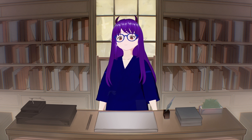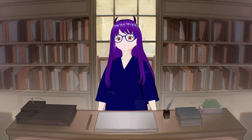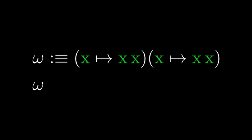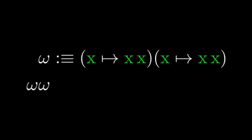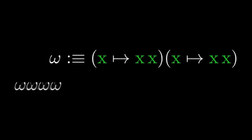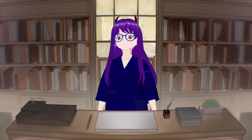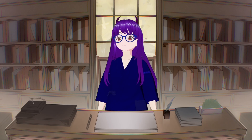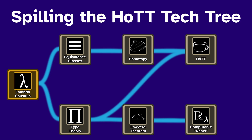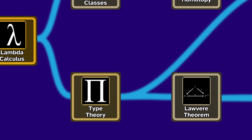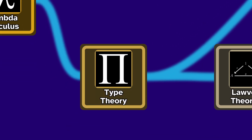In the last video we left untyped lambda calculus with two showstoppers: first, it was possible to make it crash and explode into infinite recursion. Also, you could do silly things like put numbers into boolean functions and strings into numerical functions, with all sorts of chaos resulting. In this video we are going to solve both of those problems by using type theory.